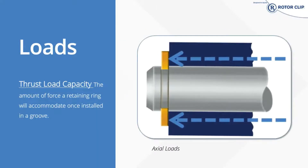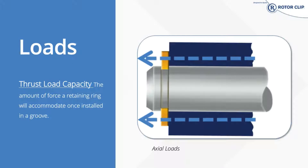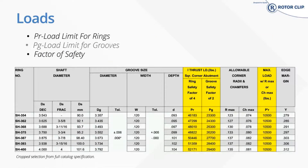Thrust load capacity is the amount of force a retaining ring will accommodate once installed in a groove. To go further into depth on that, there are two types of loads: static and dynamic. Static is constant — the load does not increase quickly. Picture putting your hand on your desk and slowly leaning onto it. That's a static load.